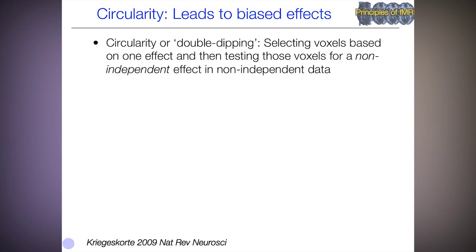So not so mysterious, but important. Next we'll talk about circularity. This is a way of thinking about brain analyses especially, and the kinds of analyses that lead to biased effects and how we avoid them. Circularity is also called double dipping, which was popularized by an article by Nico Quigus-Corde and colleagues. The idea is that you can select voxels to look at based on one effect or test, and then test those voxels on something that's not independent of that selection criterion.